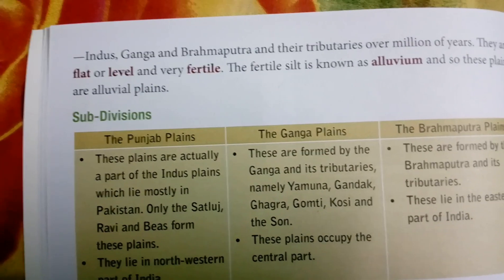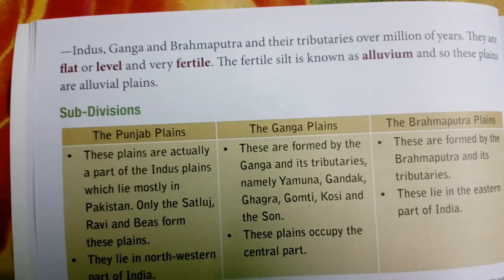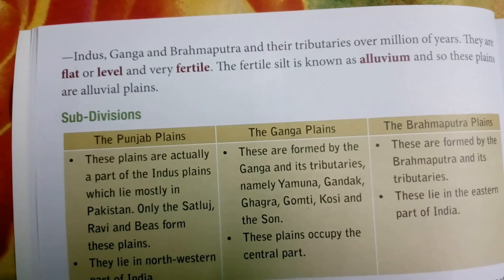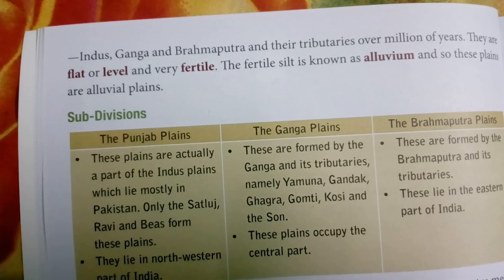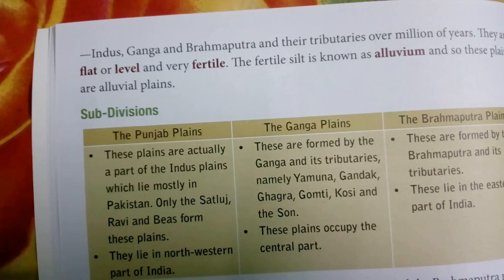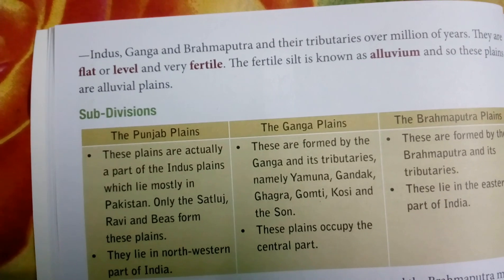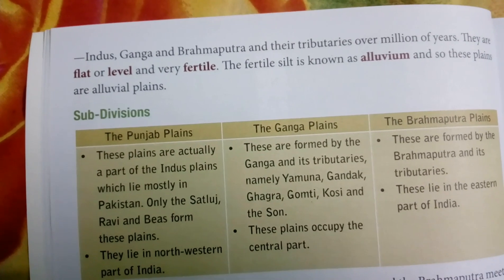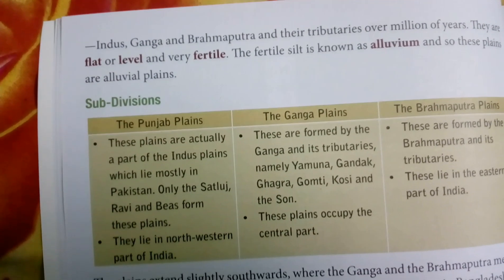The rivers Indus, Ganga and Brahmaputra and their tributaries deposited silt over millions of years. The plains are flat, level, and very fertile. The fertile silt is known as alluvium, and so these plains are called alluvial plains. Alluvium is the fertile silt brought down by the great rivers.